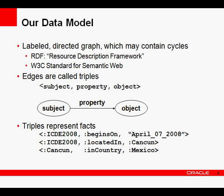I'll start with some background and motivation for the problem. The data we're inferencing over represents a labeled directed graph which may contain cycles. Edges in the graph are called triples. We write a triple as subject, property, object — where subject and object are nodes, and there's an edge from subject to object labeled by property. The identifiers used for subject, property, and object are URIs, a generalized version of a URL. Object, in addition to a URI, can also be a literal.